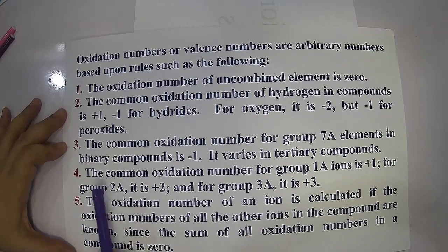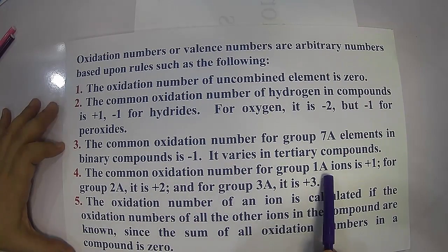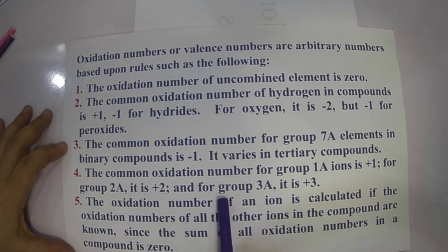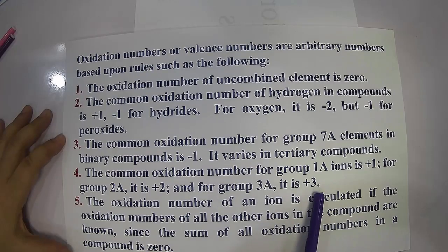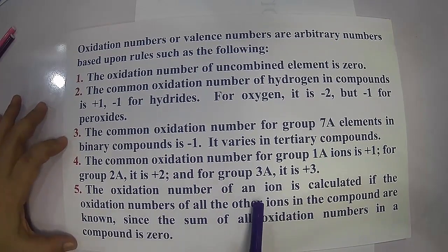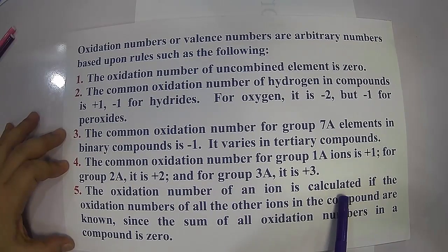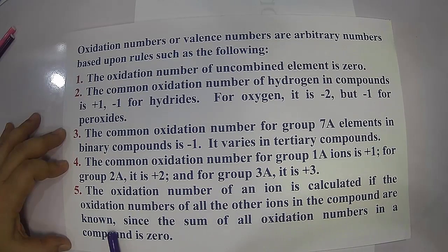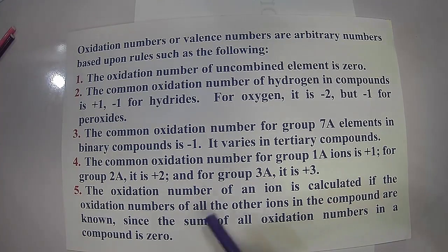The common oxidation number of group 1A ions is positive one; for group 2A it is positive two; and for group 3A it is positive three. The oxidation number of an ion is calculated if the oxidation numbers of all the other ions in the compound are known, since the sum of all oxidation numbers in a compound is zero.